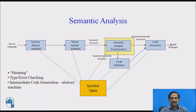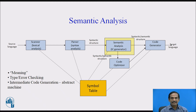Intermediate code generation is the phase that follows syntax and semantic analysis. Intermediate code should be easy to produce and easy to translate into the target program. It may be in the form of a three-address code consisting of a sequence of instructions, each having at most three operands. Other forms containing quadruples are also possible.